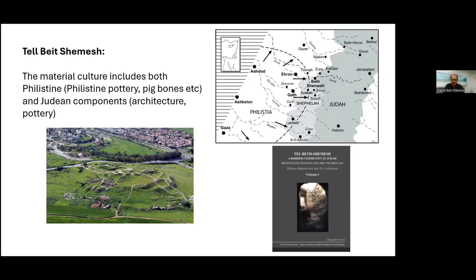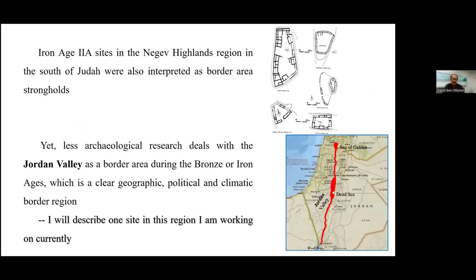We still have to think about what is the meaning of the border — is this only contact, or are there more things happening here? Another example, from the other side — not of contact but rather a more militaristic view of the border — is some sites in the Negev Highlands, in the northern Negev south of Judah during Iron Age 2A. These are small sites interpreted as strongholds, some kind of border strongholds that protected the Kingdom of Judah from other polities. This is another type of border — not of contact, but of a blockade or military presence.